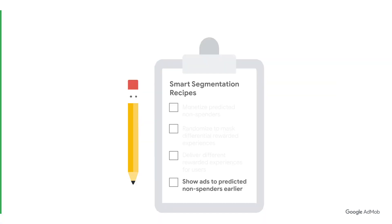Our fourth and final recipe involves showing ads to predicted non-spenders earlier to maximize the user's lifetime value. We observed that more than half of users churn within the first week of downloading an app. What this means is untapped opportunities and lost revenue for you. Fortunately, the smart segmentation model can be used on users as soon as they download an app, so you can start serving likely churners ads earlier than you would for predicted spenders.